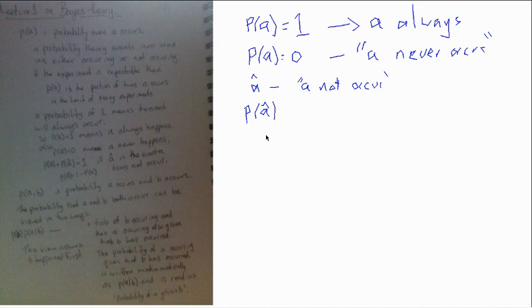And if we do any experiment, A either occurs or it doesn't occur. So the binary experiment has two outcomes. One of those two outcomes will happen. So what that means is that either probability of A or probability of not A will have a probability of 1. So that will definitely occur.